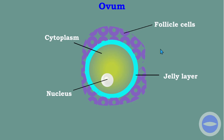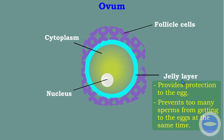Here is the ovum after it went through meiosis — it is haploid, containing 23 chromosomes. This is the jelly layer, also called zona pellucida. We have the cytoplasm, the nucleus, and inside the nucleus there is a nucleolus. There are also follicle cells. The jelly layer provides protection to the egg, and it prevents too many sperm from reaching the egg at the same time. Only one sperm is allowed to enter the egg during fertilization.